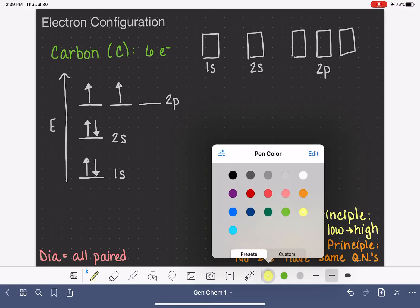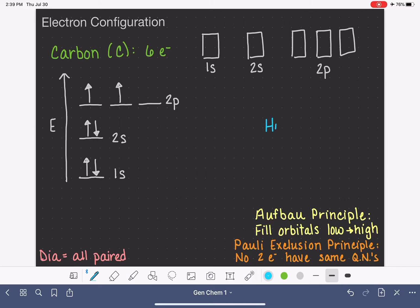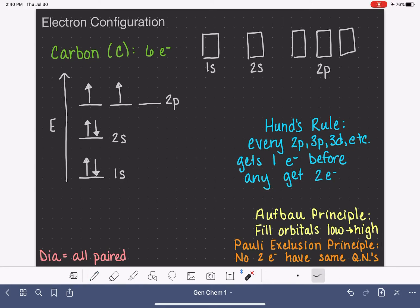This is an application of something called Hund's rule. Hund's rule tells us that as we are filling orbitals that are equal in energy, like the 2p orbitals, every orbital gets one electron before any of them gets two. This applies to 2p, 3p, 3d, etc. Every orbital that is equal in energy gets one electron before any of them get two. The analogy that a lot of chemistry teachers like to use here is sitting on a bus. As you're getting on a bus, everybody sits by themselves first before anybody starts sitting with somebody else, assuming you're getting on the bus with a bunch of strangers.